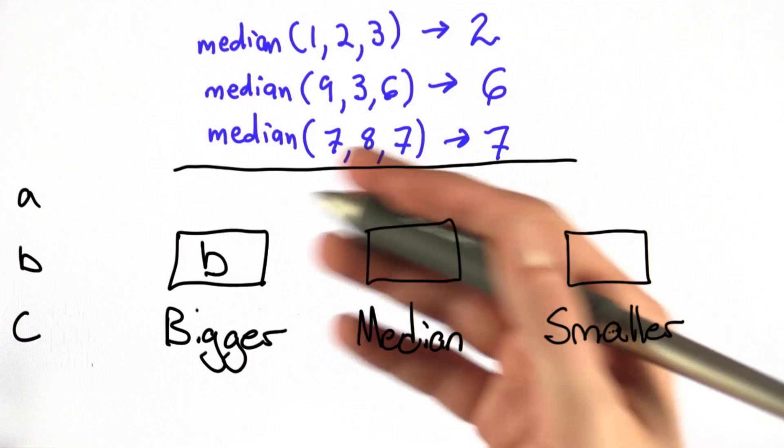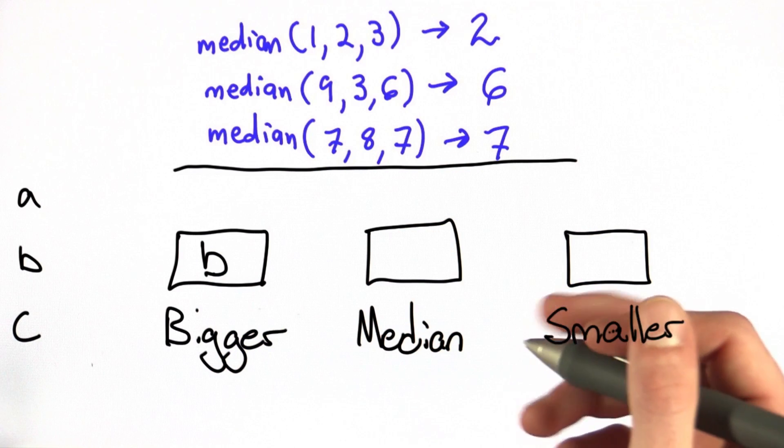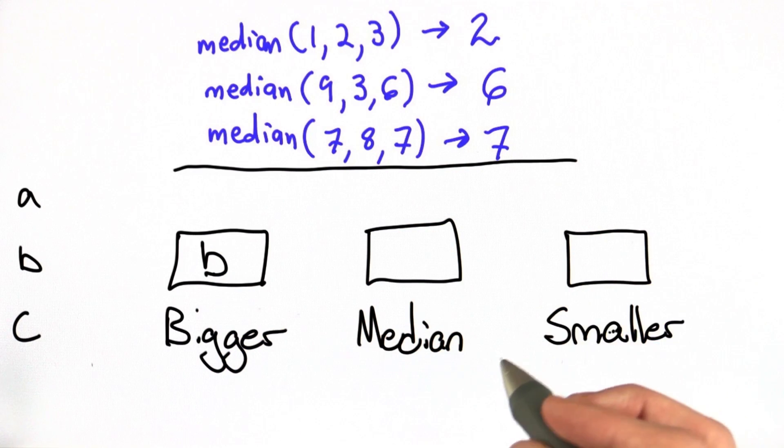We could solve this using the bigger function that you defined in lecture. From here, we only need to figure out what is the median and the smaller number.